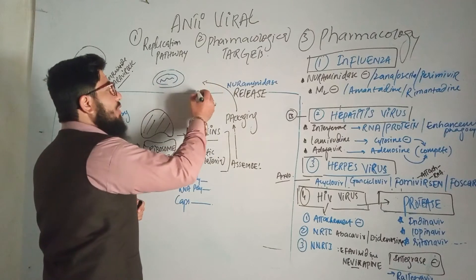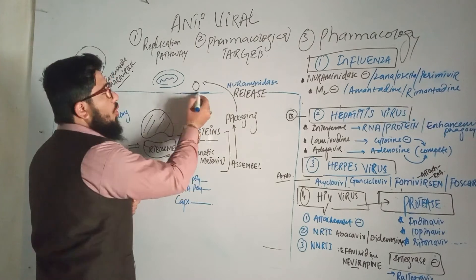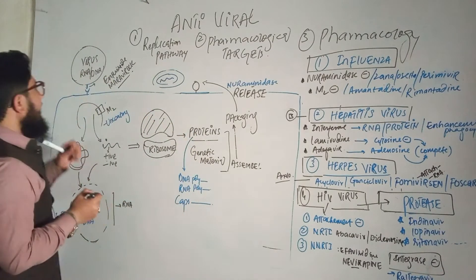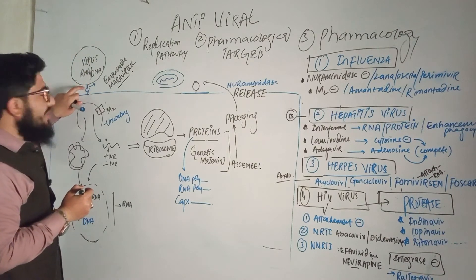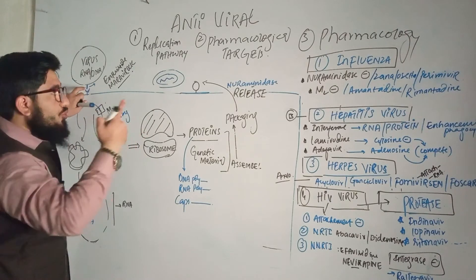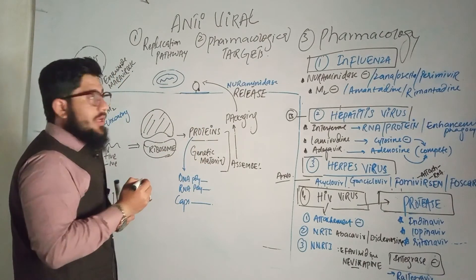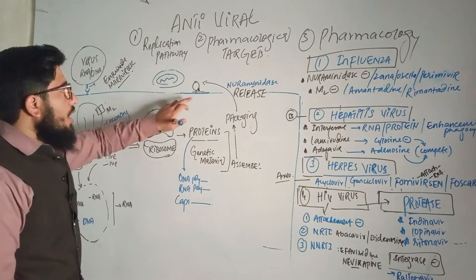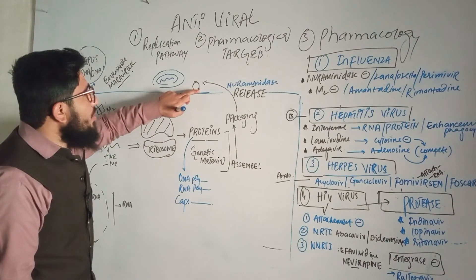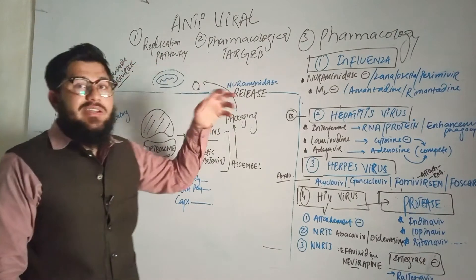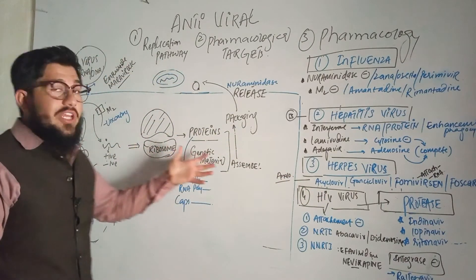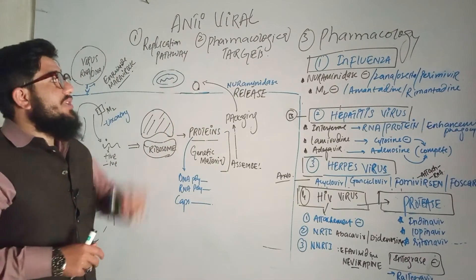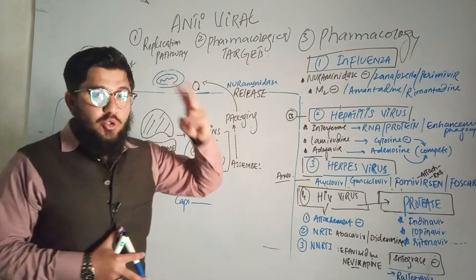The newly assembled virus copies move toward the host cell membrane but remain attached to it at a point. On the viral envelope, in addition to GP spike proteins, there are neuraminidase proteins. These neuraminidase proteins cleave the attachment point between the virus and the host cell membrane, freeing the new virion. Once free, it can go and infect another cell. This is how the virus enters, replicates, releases copies, and spreads — completing the life cycle.